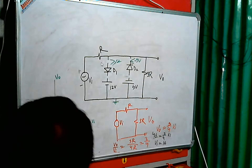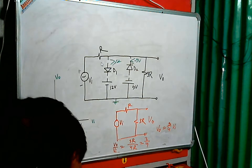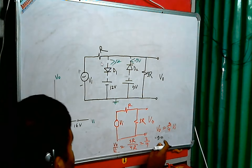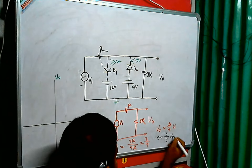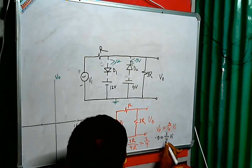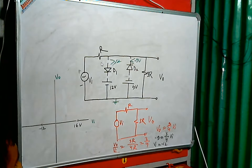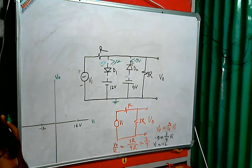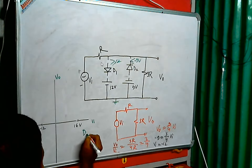Similarly, when the output voltage is less than or equal to minus 9 volts, D2 turns on. Setting output voltage to minus 9 volts, we have minus 9 equals 3 by 4 times Vi, giving Vi equal to minus 12 volts. So when the input voltage is less than or equal to minus 12 volts, D2 turns on. On the positive side, D1 turns on at 16 volts; on the negative side, D2 turns on at minus 12 volts.